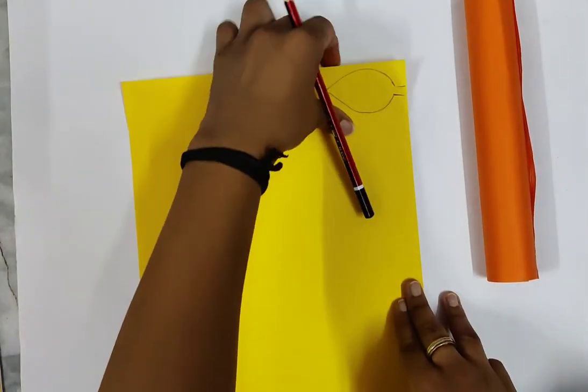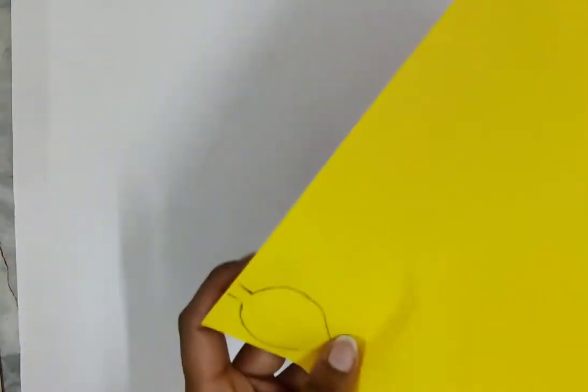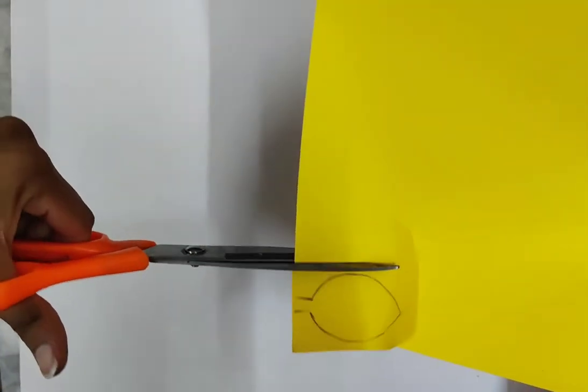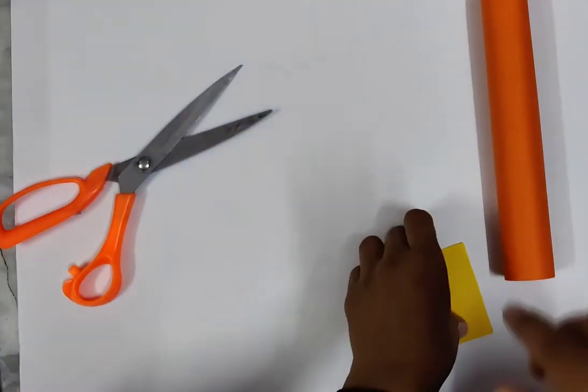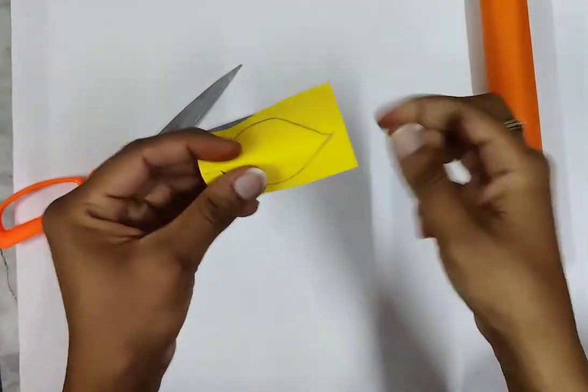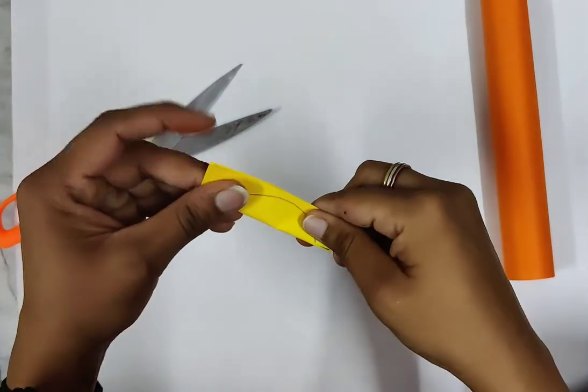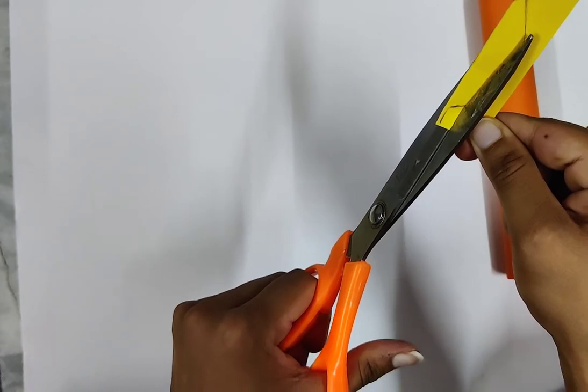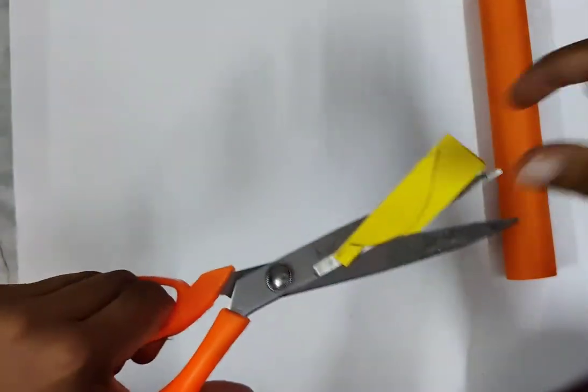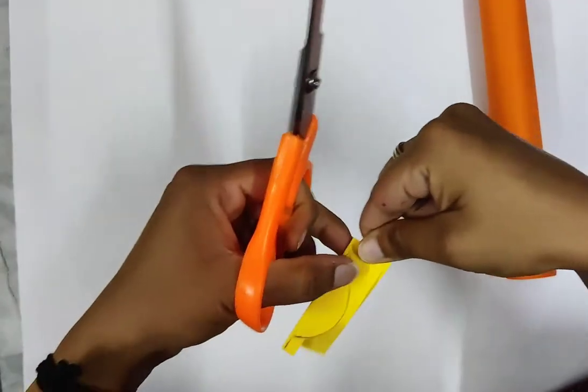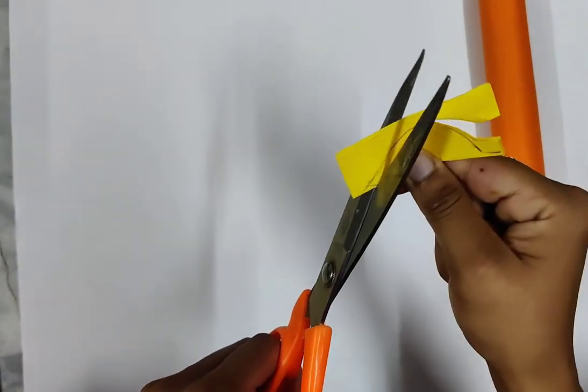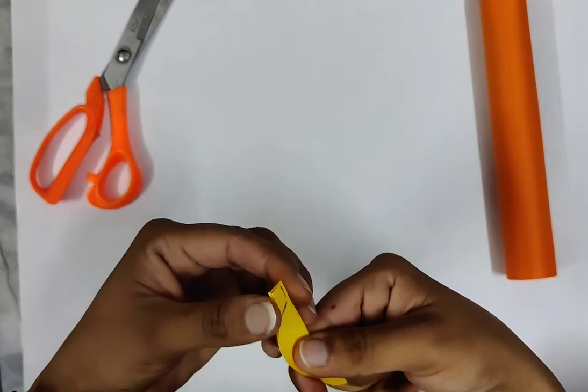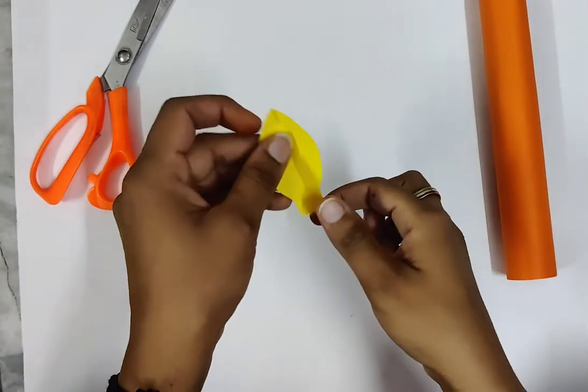Now you have to fold this in the center part. First of all you have to cut this. Now fold this with the center like this, and then cut this paper in candle light shape like this. When you cut this, your candle light looks like this.